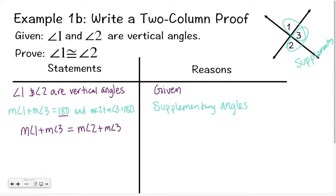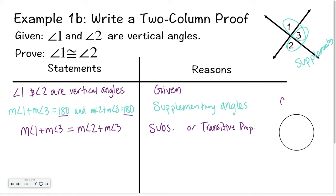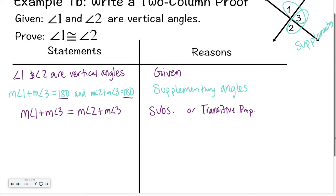Instead of writing those 180s, I got rid of those and set the other two things equal to each other. I'm okay with you calling this substitution, but technically it is the transitive property. Quick refresher on the transitive property: that was where we said if A equals B and B equals C, then A equals C. In this case, we have angle 1, angle 2, and the 180 as the third separate thing all equal to each other. If A equals B and B equals C, then A equals C. You learned about that in algebra last year at the beginning of the year.